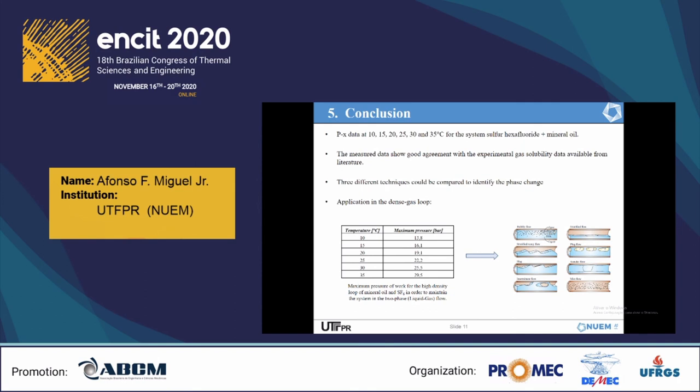For the conclusions of the present work, it could be seen that PX data at temperatures varying from 10 to 35 degrees Celsius for the system — sulfur hexafluoride and mineral oil — were obtained. The measured data show good agreement with the experimental gas solubility data available from literature. Three different techniques could be compared to identify the phase change. And at last, it was also possible to evaluate the maximum pressures of work for the high-density loop of mineral oil and SF6 being developed in the Nguyen laboratory, in order to maintain the system in the two-phase flow (liquid-gas), as could be seen in the table presented before.